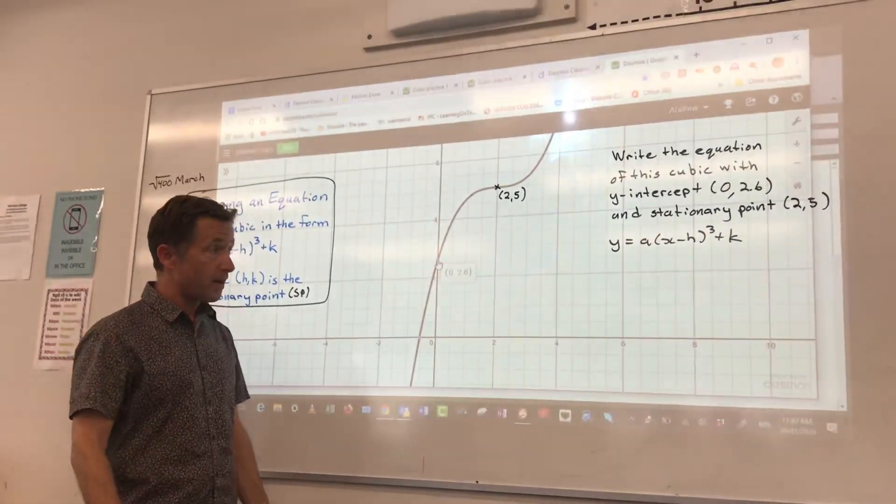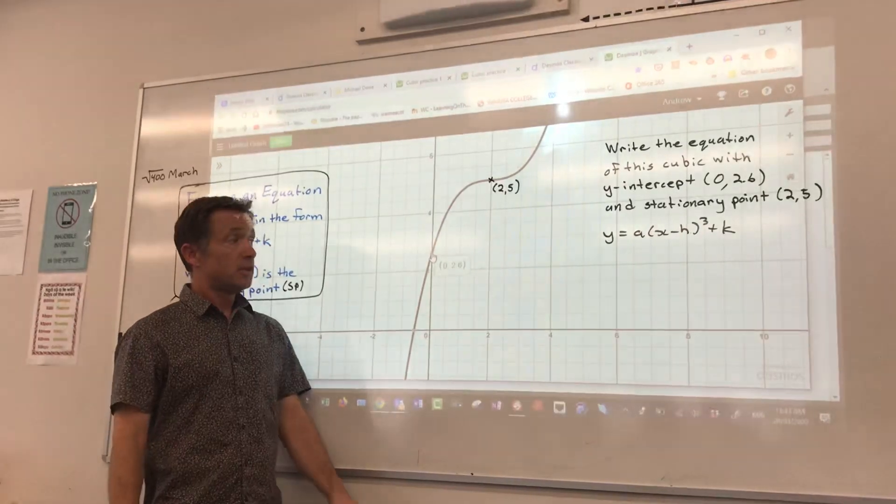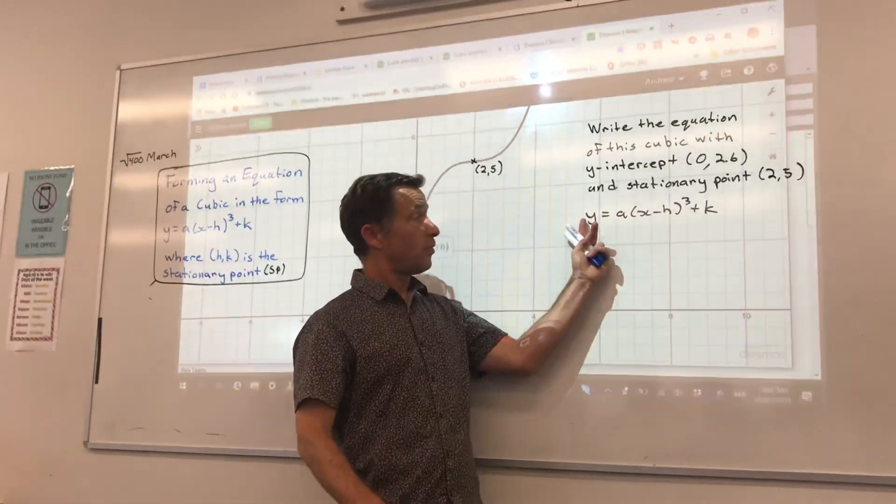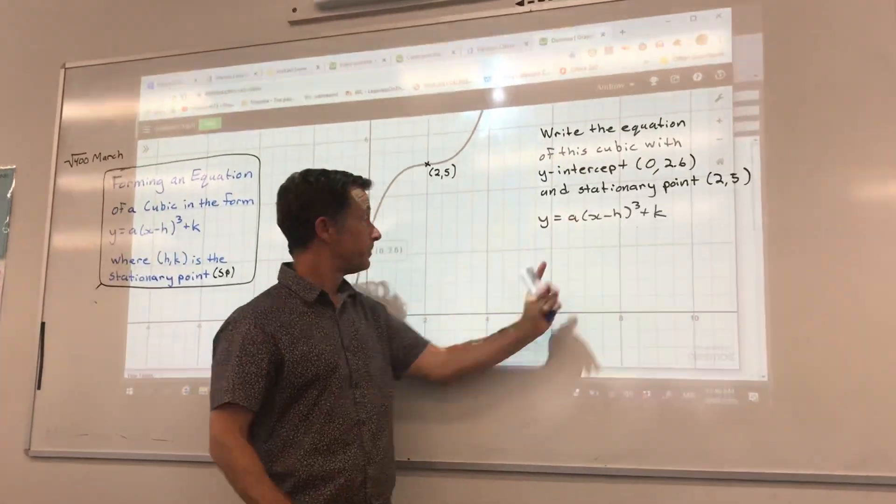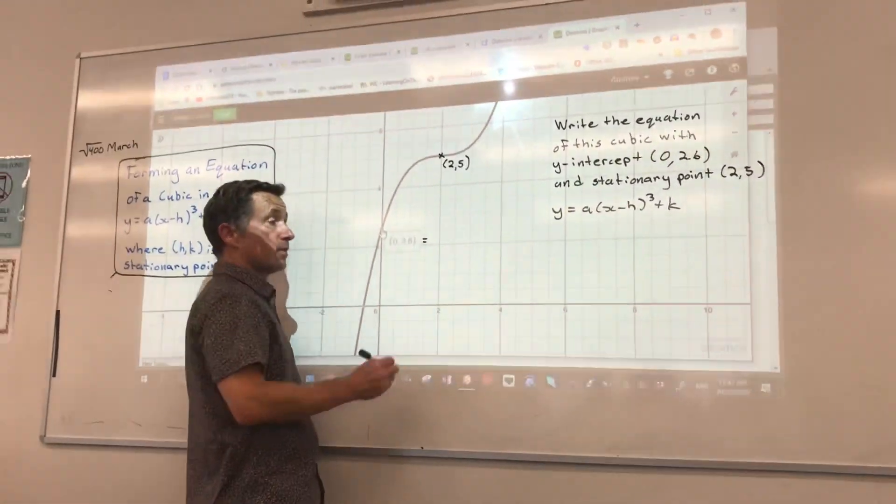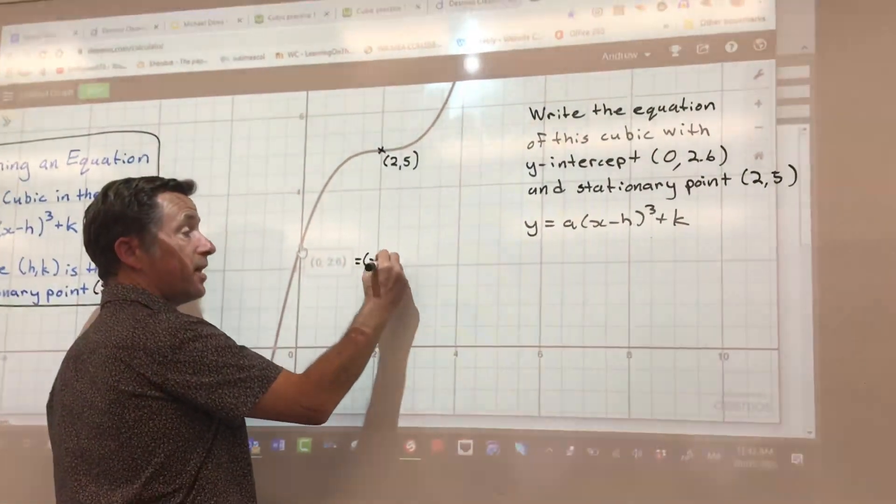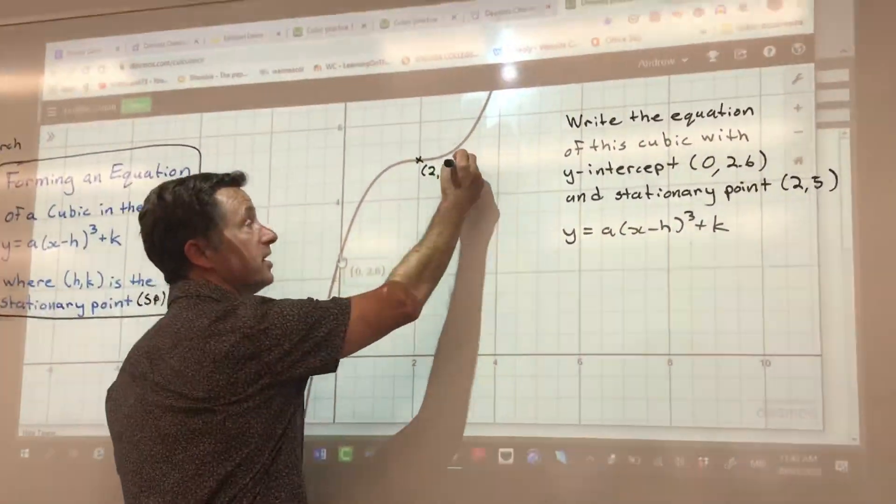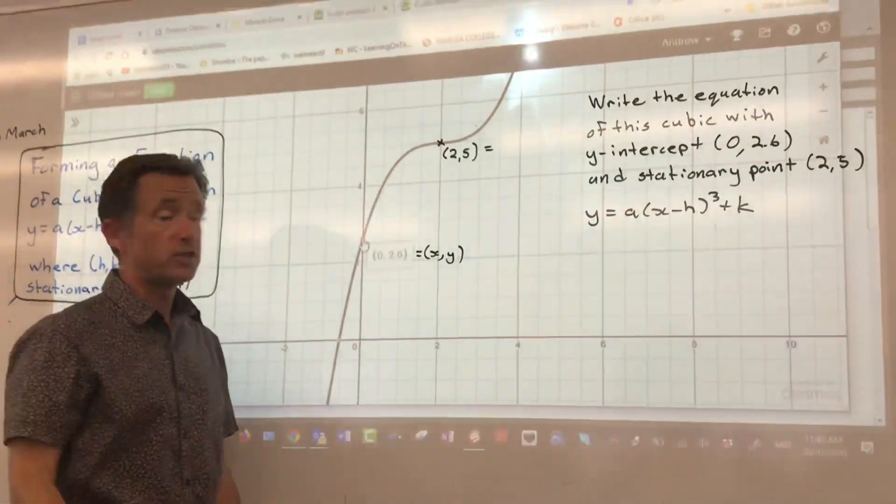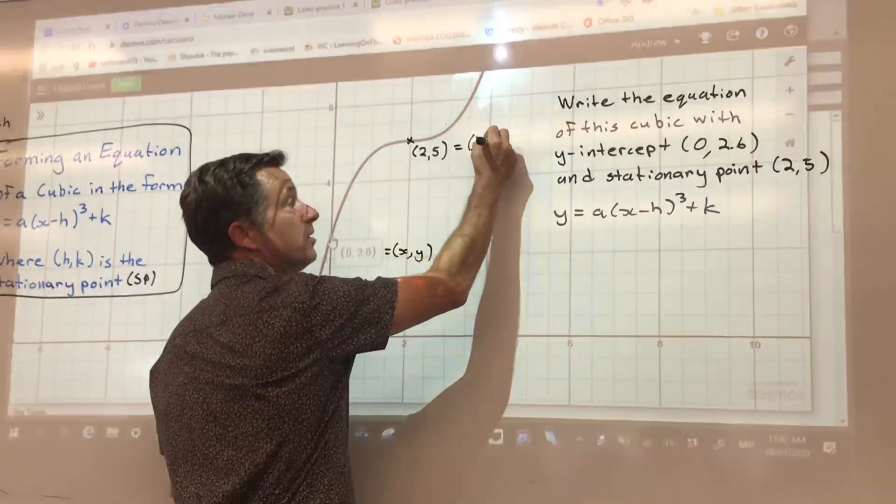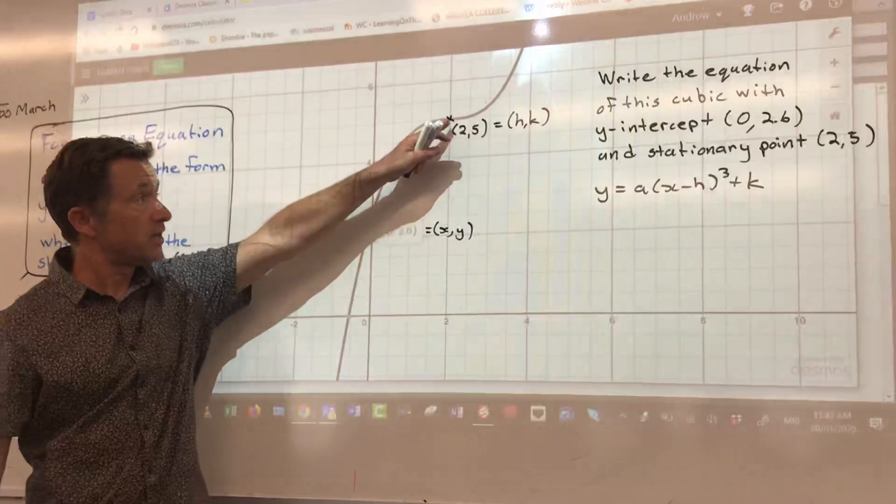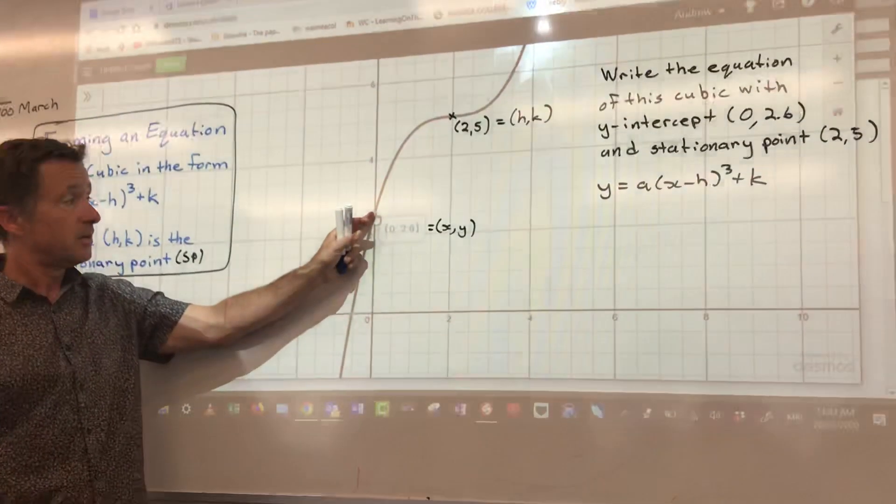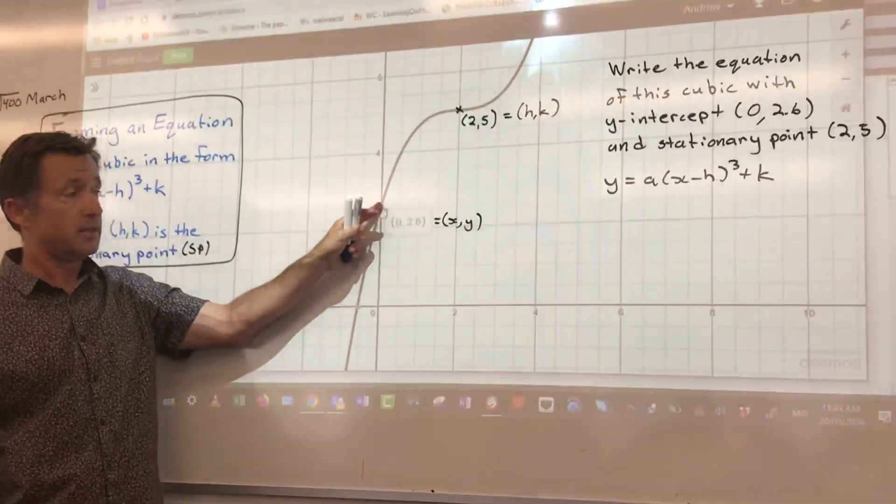All right. So first of all, just like a parabola, what we're going to do is substitute x and y and h and k and solve for that a. All right. So in case we forget, that is just some random point we're given, x, y. And this is the stationary point, h, k. We don't get too caught up with those letters. We just need to know that's the stationary point and that's the y-intercept. But it can be any point. It doesn't matter. It doesn't have to be that one.